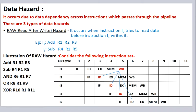In the fifth instruction, its ID stage takes place after the write back stage of instruction 1, so no hazard will be there.